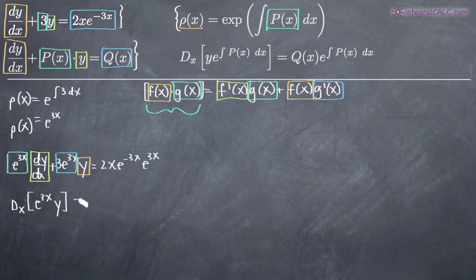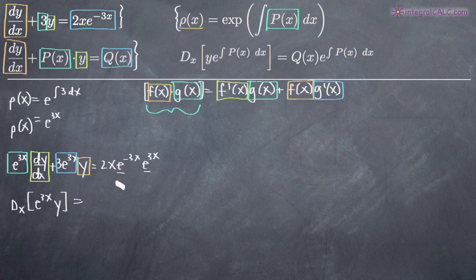On the right-hand side, we have e to the negative 3x times e to the 3x. Since the bases are the same, we add the exponents: negative 3x plus 3x equals 0, and e to the 0 is 1. So those terms cancel, and we're left with just 2x on the right-hand side.